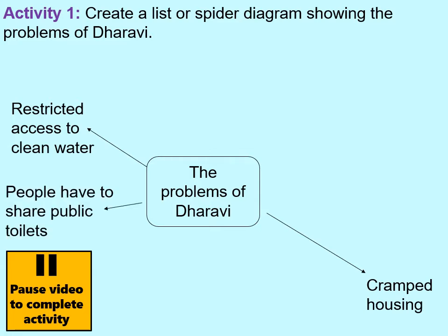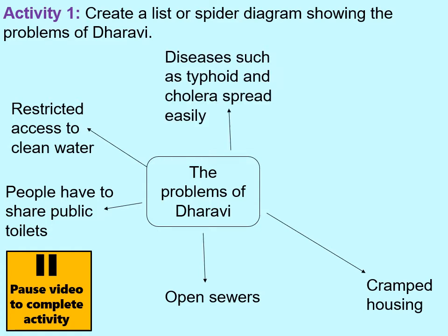People have to share public toilets. Statistics vary, but between 500 and 1,500 people share each public toilet within Dharavi, because houses don't usually have toilets, and this means diseases can spread quite easily. It also means that some people choose not to use the toilets and may defecate in a bucket and throw it into an open sewer. This spreads diseases such as typhoid and cholera, which occur when bacteria from human waste enters your body — perhaps through drinking contaminated water or eating food cooked in it — meaning people have to spend money getting better or take days off work.